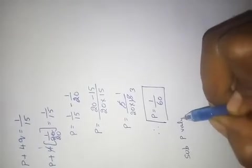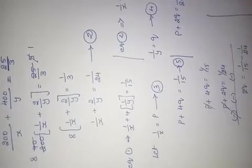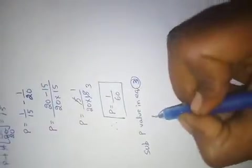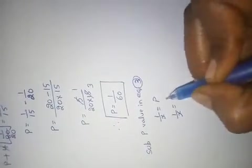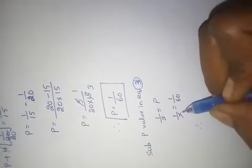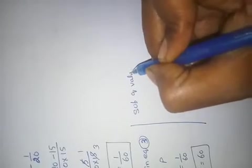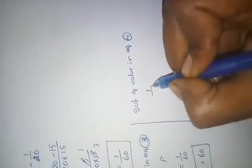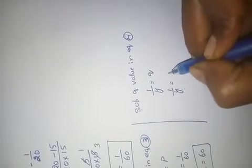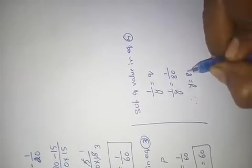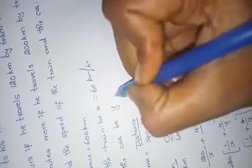Substituting P value in equation 3: 1/x = P = 1/60. Cross multiplying gives x = 60. Similarly, substituting Q value in equation 4: 1/y = Q = 1/80, so y = 80. Therefore, the speed of the train equals x = 60 km/h, and the speed of the car equals y = 80 km/h.